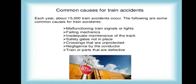Common causes of train accidents include: malfunctioning train signals or lights, failing mechanics, inadequate maintenance of the track, safety gates not in place, unprotected crossings, negligence by the conductor, and defective train parts. Every year, about 15,000 train accidents occur, and people can stop this because it is truly a man-made disaster.